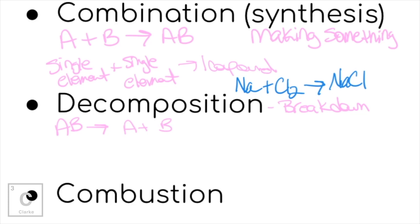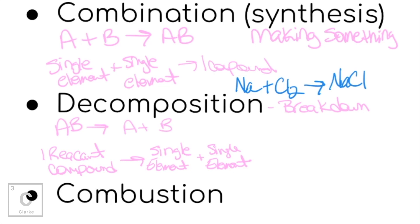Visually, what we're looking for is one reactant that's a compound, breaking down into single elements — or just smaller compounds. A real example: mercury oxide, that's actually mercury(I) oxide, breaking down into mercury and oxygen gas. We had a compound as our reactant, and it breaks down into two elements. I like to talk about synthesis and decomposition together because they're opposites of each other.